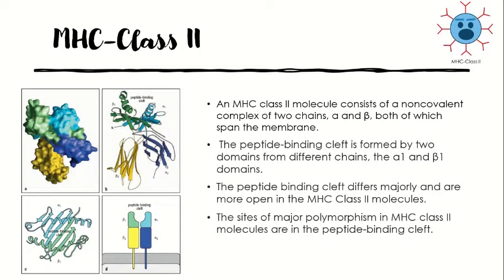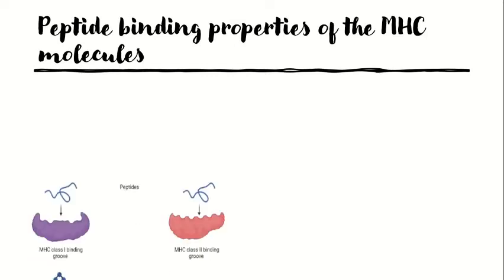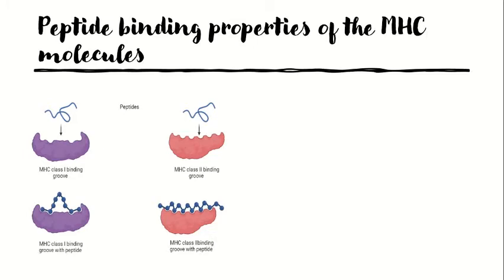In both MHC class 1 and class 2 molecules, bound peptides are sandwiched between two alpha-helical segments of the MHC molecule. The T cell receptor interacts with this compound ligand, making contacts with both the MHC molecule and the peptide antigen. Sites of major polymorphism in MHC class 2 molecules are located in the peptide binding cleft. Importantly, the peptide bound to an MHC molecule serves as an integral component of the MHC molecule's structure — MHC molecules are unstable when no peptide is bound.